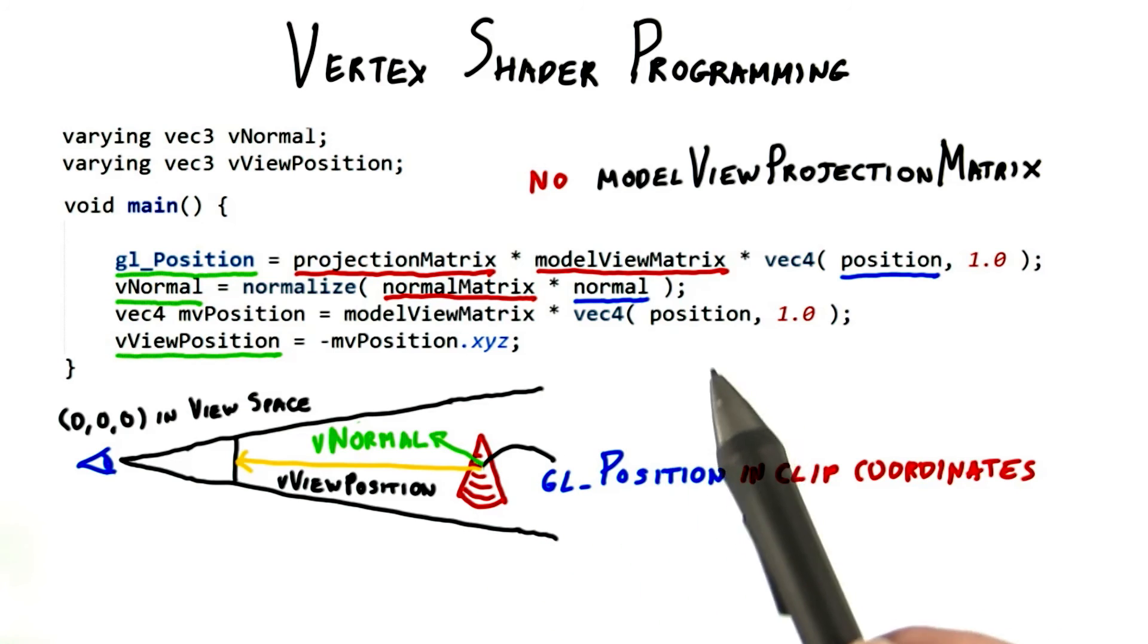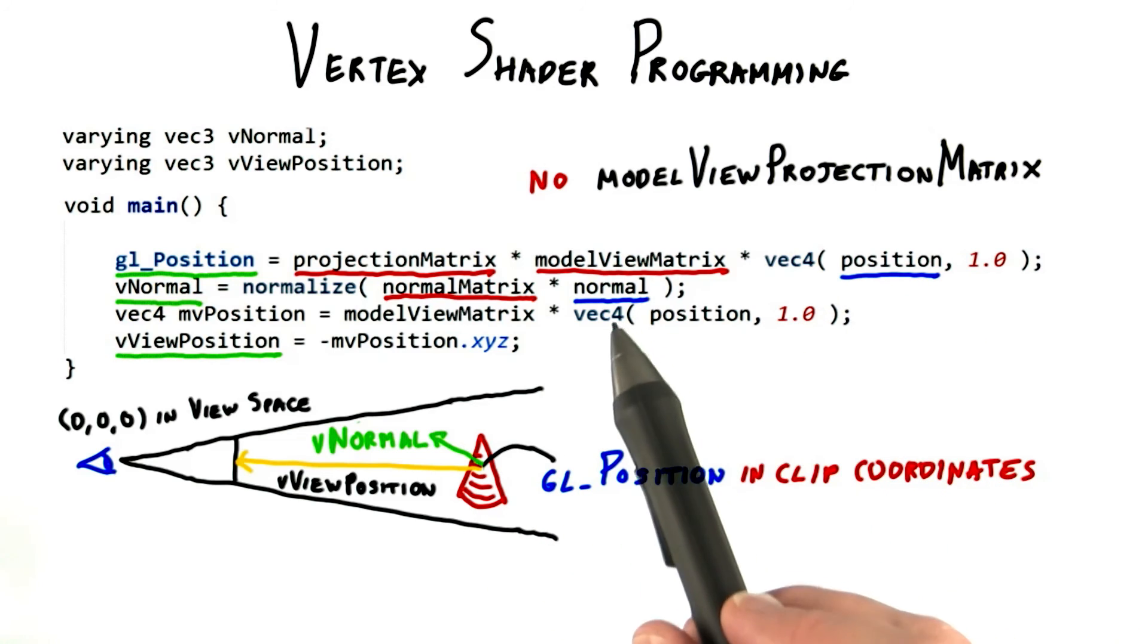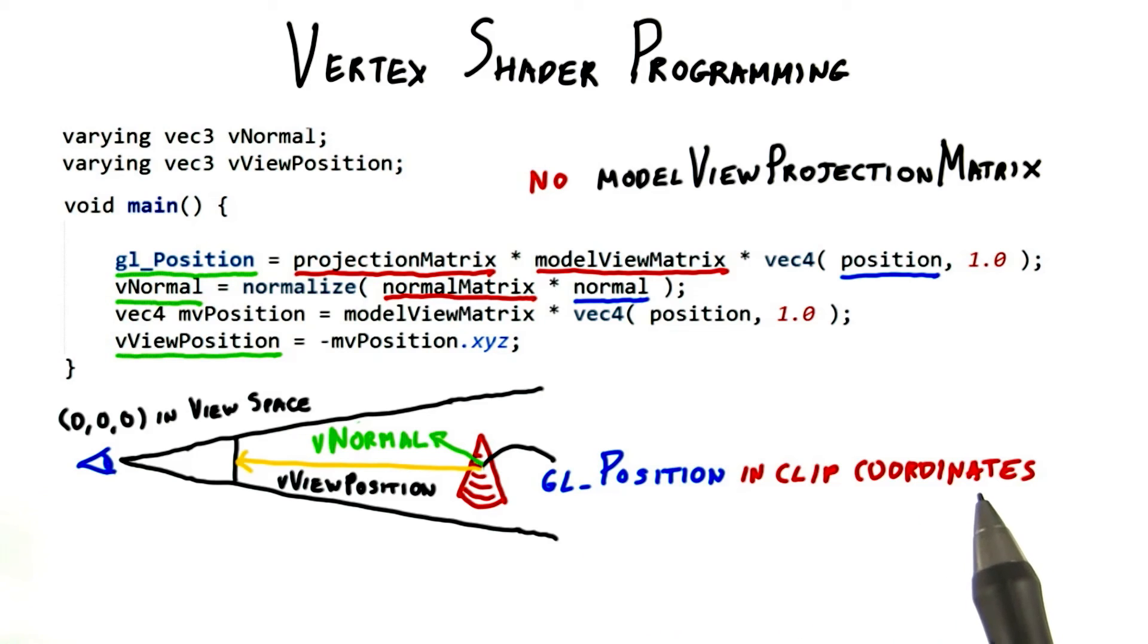To sum up, the vertex shader took as inputs the model space position and normal. It transformed them to create a point in clip coordinates for the rasterizer. It also transformed the normal and position. The resulting transformed vertices are then interpolated across the triangle during rasterization and sent to the fragment shader for each fragment produced.